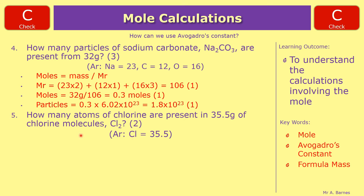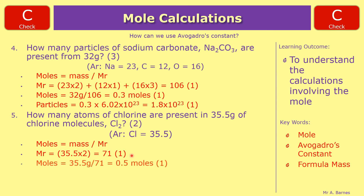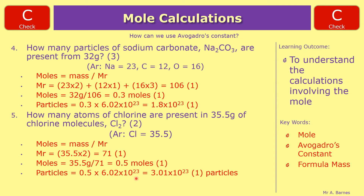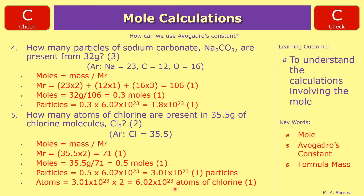Question 5: how many atoms of chlorine are present in 35.5 grams of chlorine molecules Cl₂? First, moles = mass divided by Mr. The Mr is 35.5 × 2 = 71, worth one mark. Then 35.5 divided by 71 gives 0.5 moles, worth one mark. Particles = 0.5 × 6.02 × 10²³ = 3.01 × 10²³ particles of Cl₂ (molecules). To get atoms, multiply by 2: that gives 6.02 × 10²³ for your final mark.